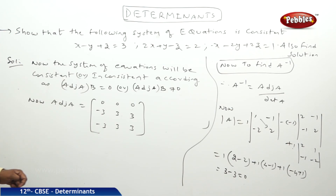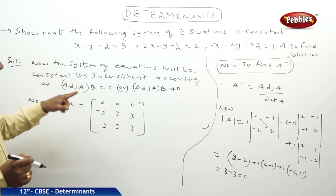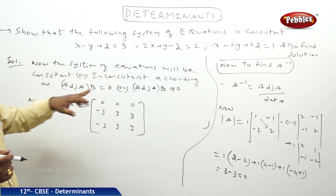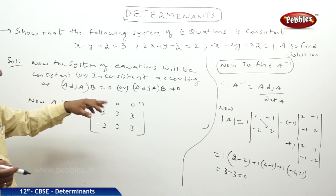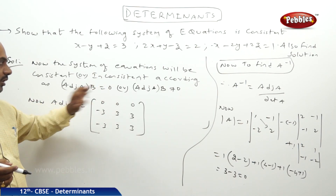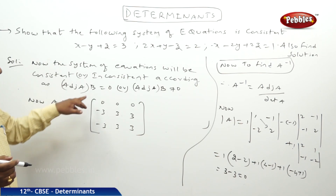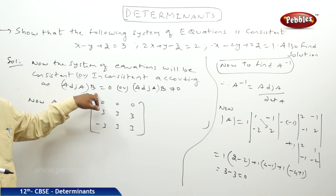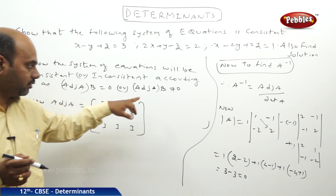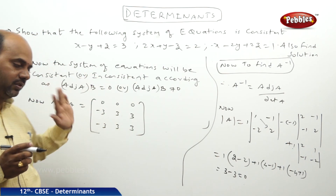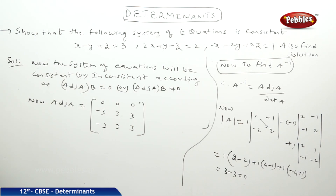After finding the determinant, we need to write this in our answer sheet, in our examination sheet. The system of equations will be consistent or inconsistent according as adjoint of A into B equal to 0 or adjoint of A into B not equal to 0. That means if it is equal to 0, it is consistent and possesses infinitely many solutions, and if it is not equal to 0, it will be inconsistent.